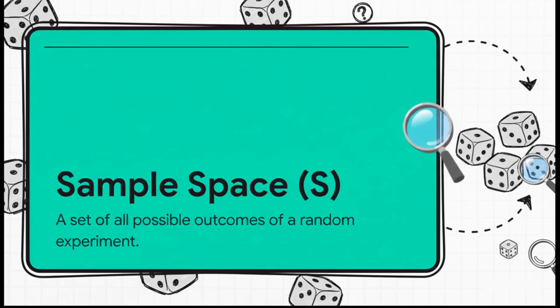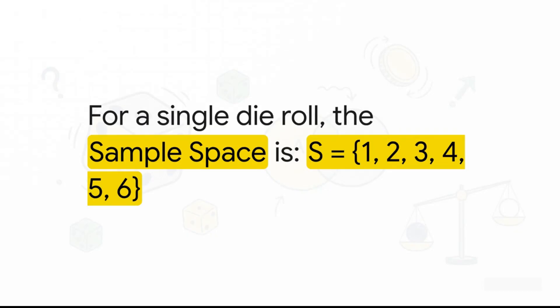So we have our experiment, rolling the die. The very next question is, well, what could happen? The answer to that is what we call the sample space. It's nothing more than a complete list of every single possible outcome. Everything that could possibly happen. No more, no less. It's our entire universe of possibilities. Yep, exactly. For our die roll, this sample space is just the numbers 1, 2, 3, 4, 5, and 6. That's it. That's the whole list of what could happen when you roll the die. Pretty straightforward, right?